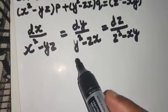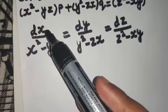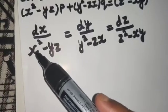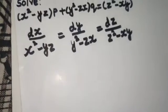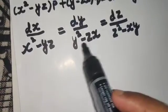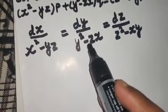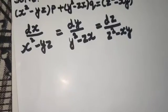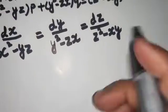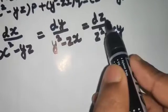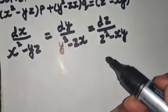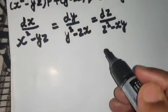Now if you compare two fractions at a time, you won't get anything special. For dx, you need functions of x and y to separate things, but z appears in both the first and second fractions. Similarly, comparing the second and third, x appears where you need functions of y and z, so you can't separate it either.